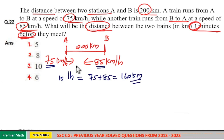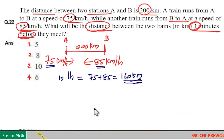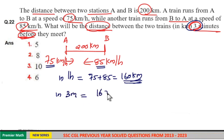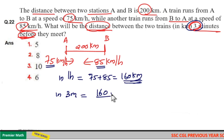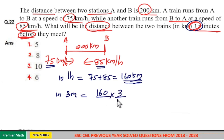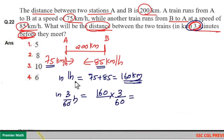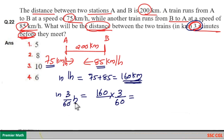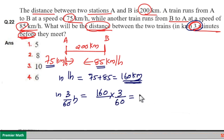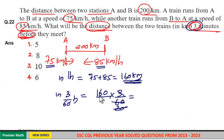In one hour, if these two trains cover 160 km, then in three minutes these two trains will cover 160 multiplied by three minutes — that is, 160 into three by 60 hours, since three minutes means three by 60 hours. This equals 8 km.